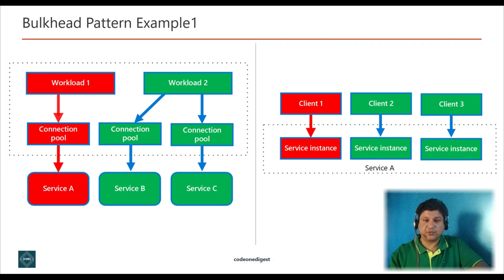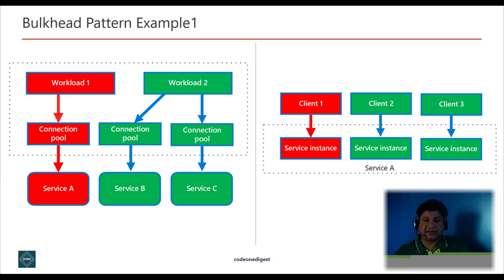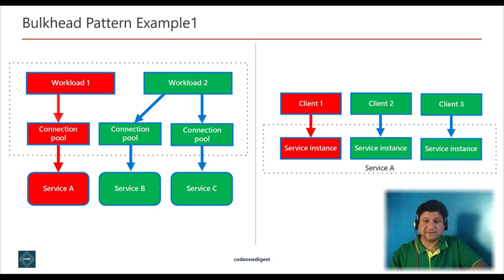A consumer can partition resources to ensure that resources used to call one service don't affect resources used to call another. For example, a consumer calling multiple services may be assigned a separate connection pool for each service. This diagram shows the bulkhead structure around connection pools. If service A fails, only the connection pool assigned to service A is affected, allowing the consumer to continue using services B and C without interruption. Each client is assigned a separate service instance, so if one client overloads its instance, other clients can continue making calls.